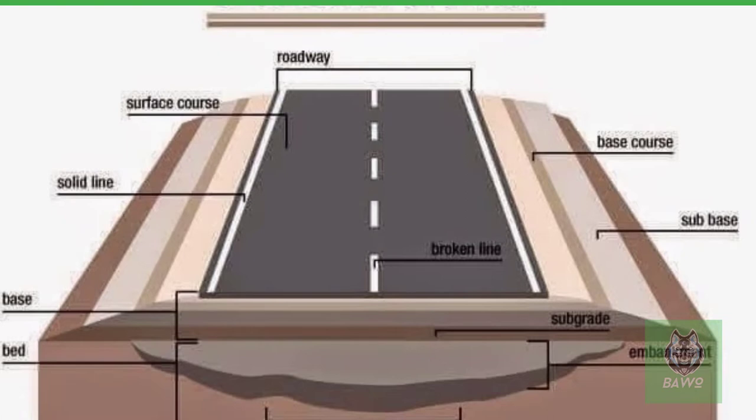A pavement consists of layers or courses. 1. Surface or wearing course: this is the topmost layer, its function is to provide a smooth, strong, abrasion-resistant and reasonably impervious course. Since it is directly in contact with vehicle tires, it must resist imposed wheel loads and transmit them safely to the layer below. The material may be granular, bituminous or cement concrete, depending on the nature of the construction.